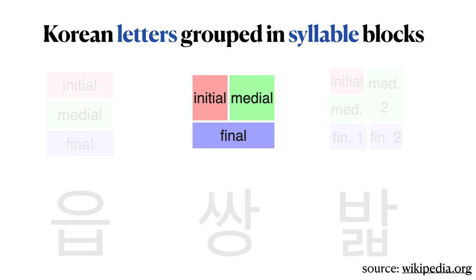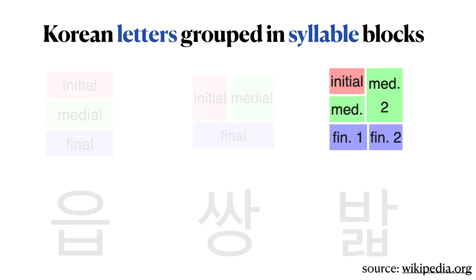Here's another three-letter combination where the initial and medial symbols are side by side with the final symbol below. There are other more complex syllable structures, such as what we see here, where we have an initial symbol, two medial symbols, and two final symbols. The syllable shown here only has one medial symbol, so we have an initial, one medial, and two final symbols.